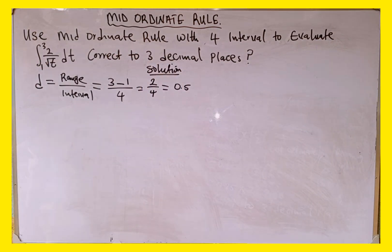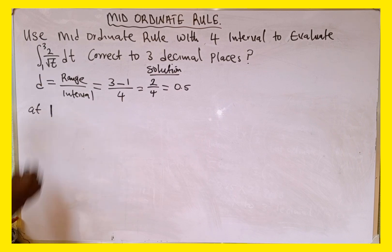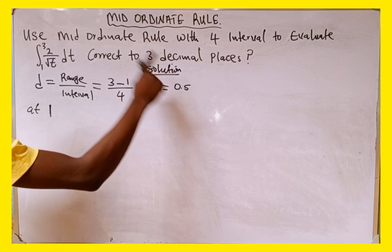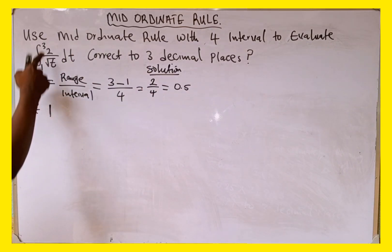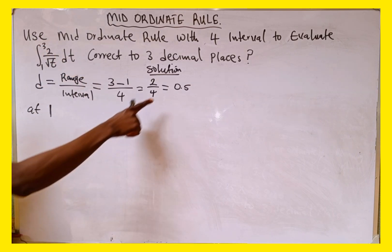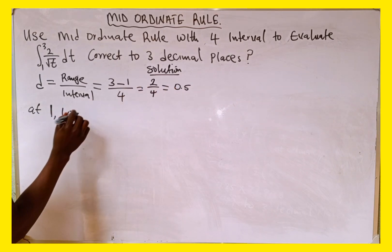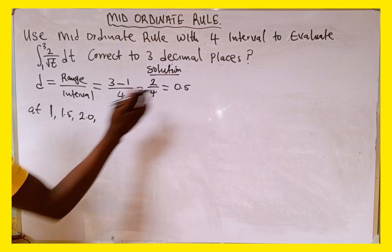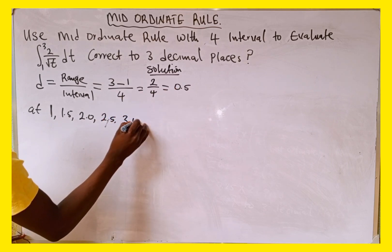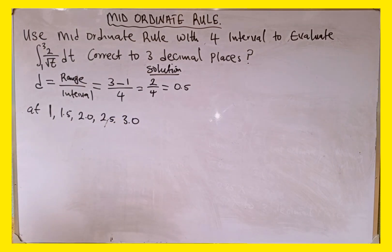The ordinate starts at the lower limit, which is 1. We then add the width of 0.5 repeatedly up to the upper limit: 1, 1.5, 2.0, 2.5, 3.0. We stop once we reach the upper limit of 3.0. These are the ordinates.